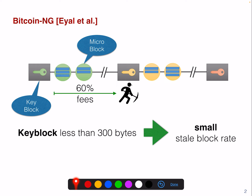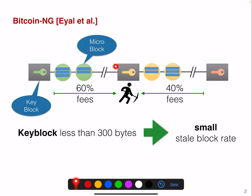To fix the incentive mechanisms in Bitcoin-NG, 60% of the fees of the micro blocks go to the miner of the next key block, while 40% of the fees of the subsequent micro blocks go to the current leader.